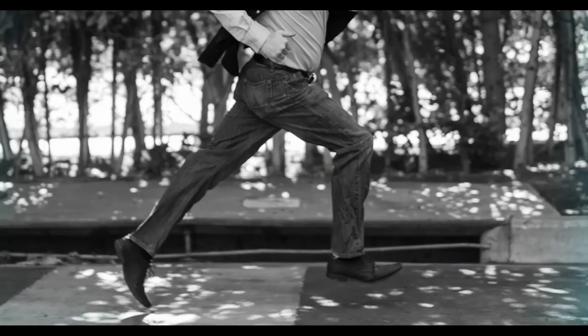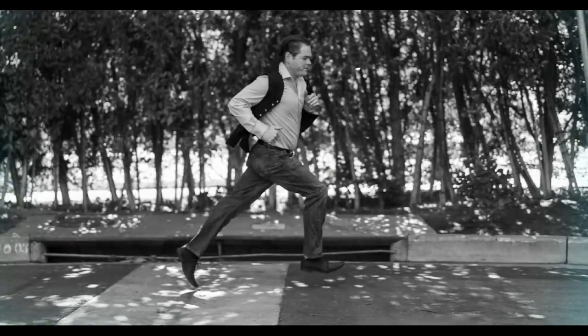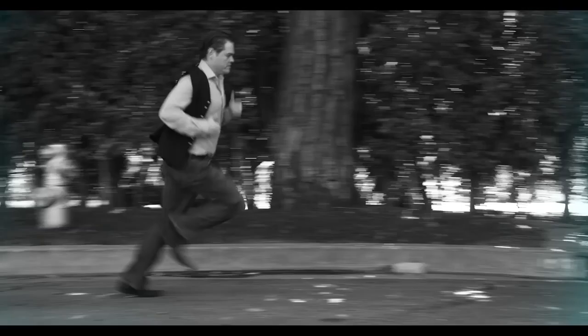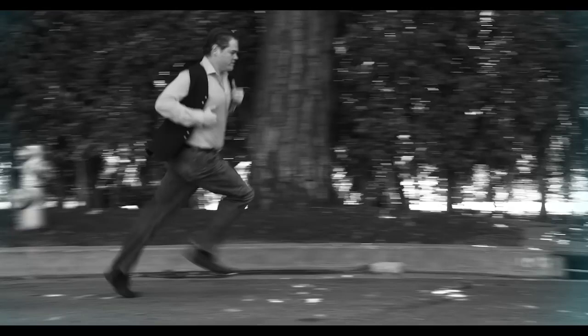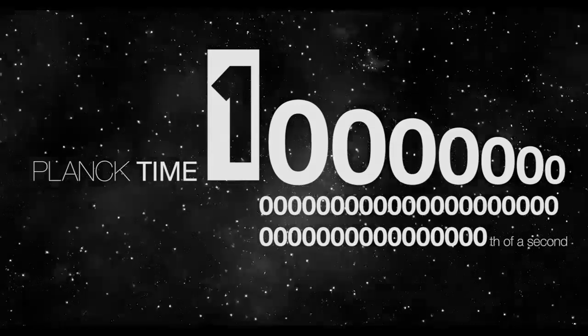In a movie shot on 35mm film there are 24 frames a second — there is no actual movement in a movie, just a sequence of frozen frames. Now remember the Planck length of space, which is the smallest length possible. Well, there is also a Planck length of time, and it is much shorter than 24 frames a second — in fact it's 10 to the 44 times shorter than a second.